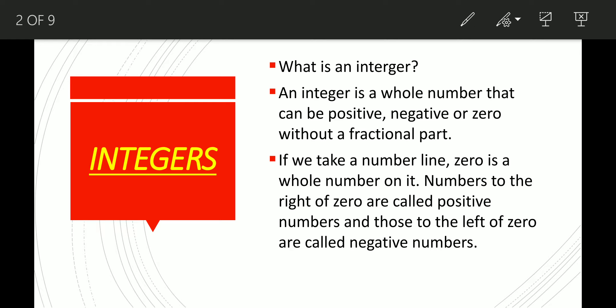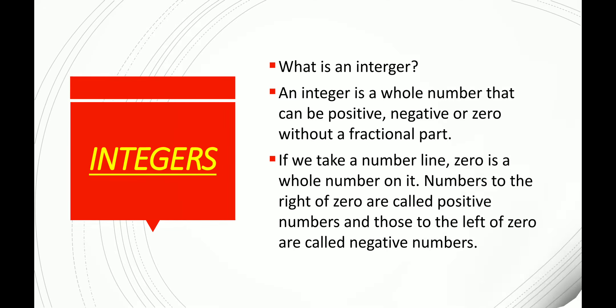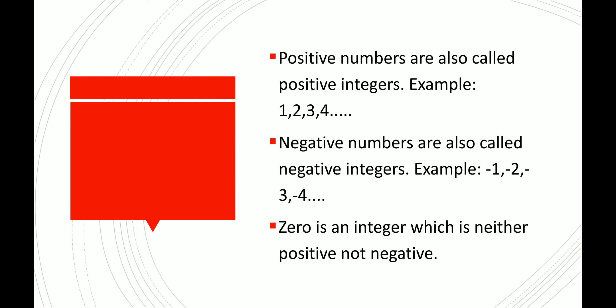If we take a number line, zero is a whole number on it. The numbers which are to the right of zero are called positive numbers. Positive numbers are called positive integers. For example, 1, 2, 3, 4, 5, and so on.